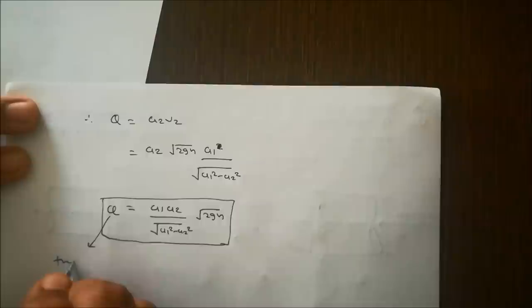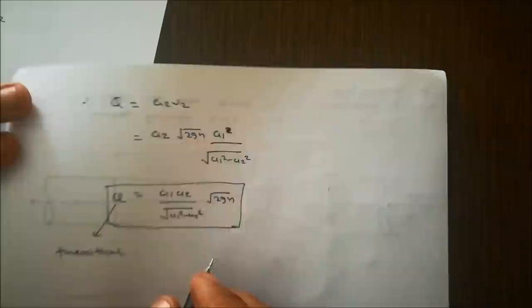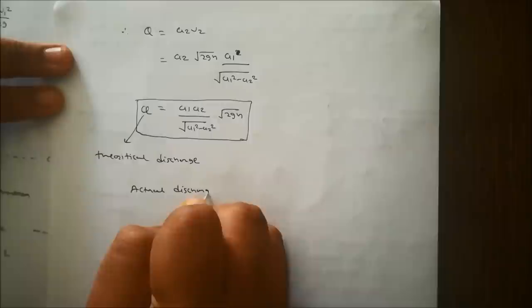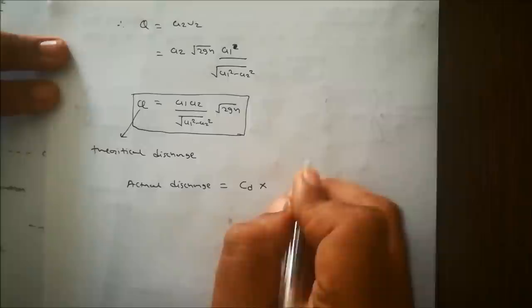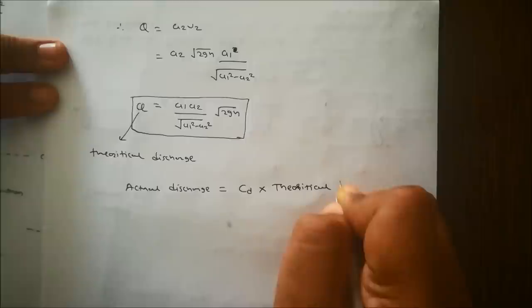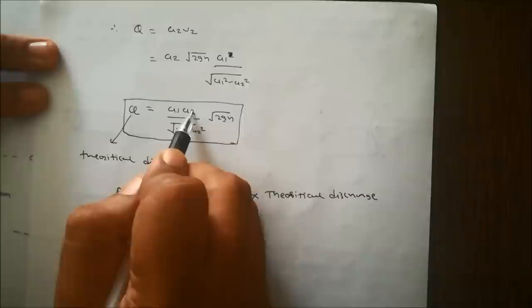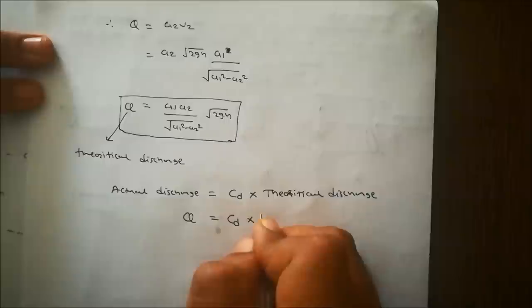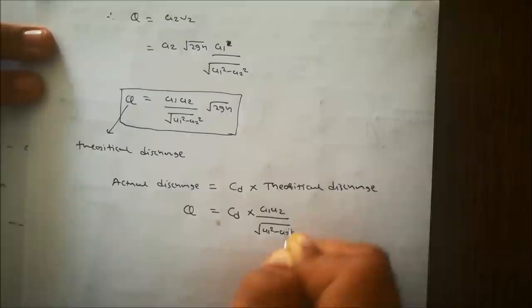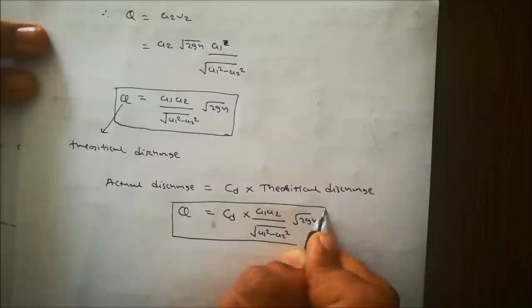This is the theoretical discharge, because we assumed no loss of energy. The actual discharge equals the coefficient of discharge Cd multiplied by the theoretical discharge: Q_actual = Cd · A1·A2·√(2gh) / √(A1² − A2²).